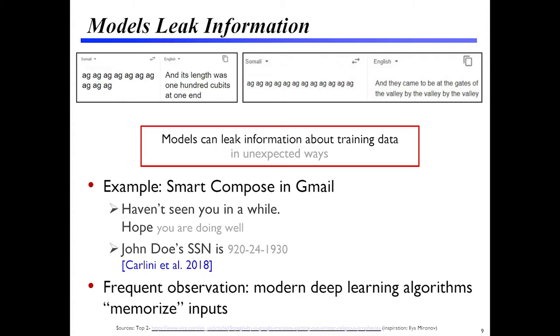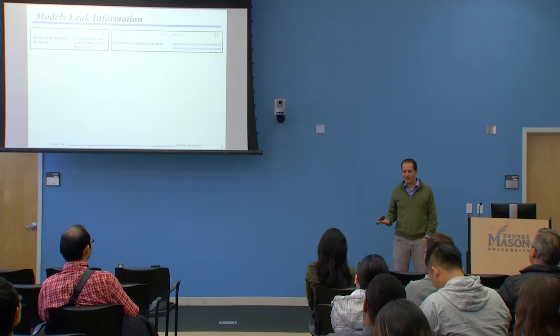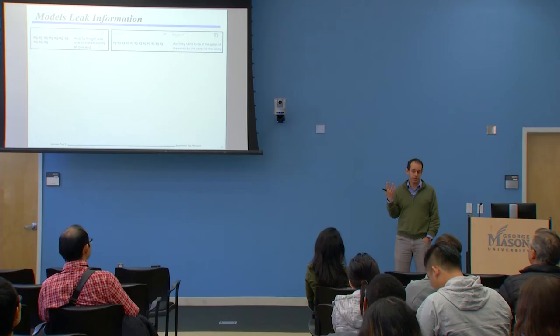A lot of the deep learning models we're using increasingly these days reveal even more information. Here's a screenshot from Google Translate, translating from Somali to English. 'Ag, ag, ag' is nonsense even in Somali, and what came out is a phrase from the Bible. You put in a different Somali phrase and you get out a different English phrase from the Bible. Does anybody have a guess why the model is speaking in tongues?